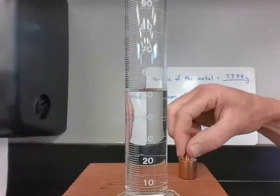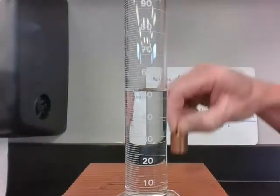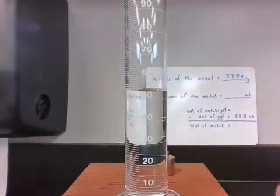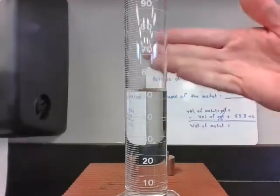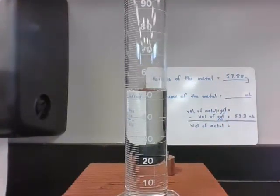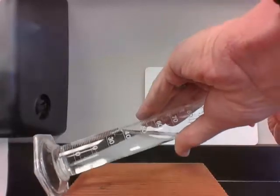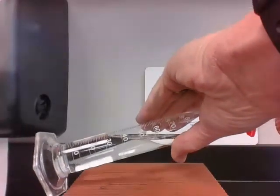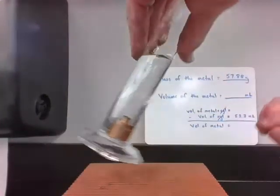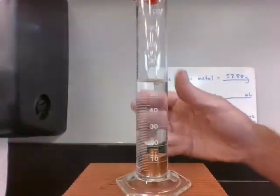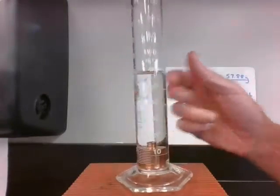Now I need to place this metal into the cylinder without splashing. I can't just drop it in—I might break the bottom and splash water everywhere. I need to slide it in carefully. I'll tilt the graduated cylinder and slide it in slowly. Then I'll lightly tap to get rid of any air bubbles that have collected.